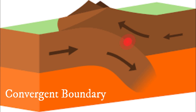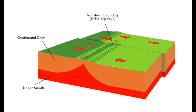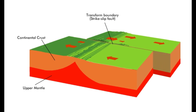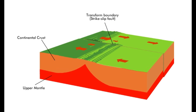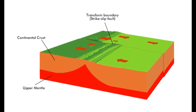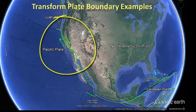The third type is the transform fault boundary, where plates slide or grind past each other without diverging or converging. The best example of this plate boundary is the San Andreas fault, which is bounded by the North American plate and the Pacific plate.